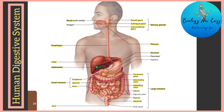The last associated gland linked with the digestive system is the pancreas. It is located behind the stomach and is therefore only partially visible. This completes our overview of the human digestive system.